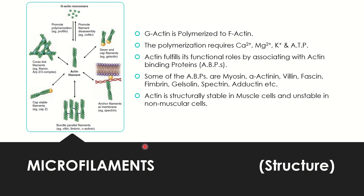For the structure of microfilaments: G-actin is the monomer and F-actin is the polymer, so G-actin is polymerized to form F-actin. This polymerization requires special molecules and ions for stability: calcium ions, magnesium ions, potassium ions, and adenosine triphosphate (ATP) for energy purposes.